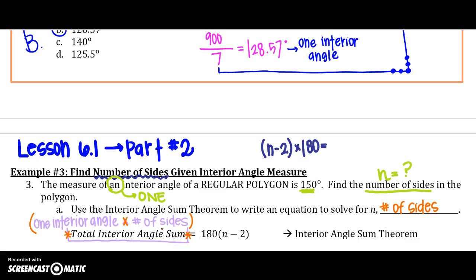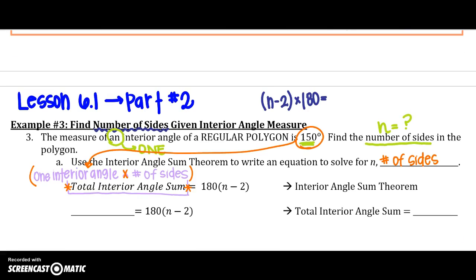So what we can do is we can use this 150 degrees in place of that one interior angle. So how would we set this up? We would say 150 degrees, that one interior angle, times the number of sides, which we can call n, equals n, the number of sides, minus 2 times 180. Because we know the total interior angle sum really equals 150 times the number of sides.